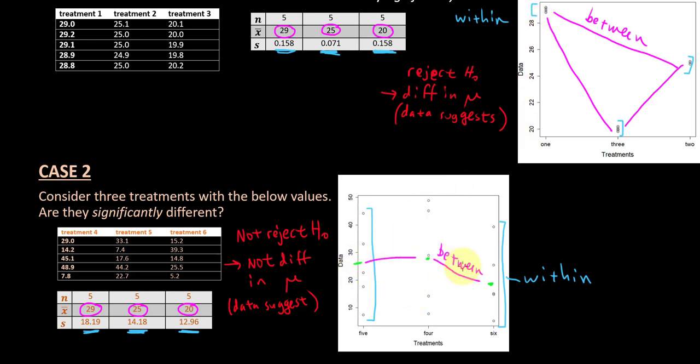So case number one here, this difference in the sample means seems really large because it is large with respect to the within variability. The change in pink here is large with respect to this blue bar. Over in case number two, the change in this pink amount is not that large when compared to how spread out this blue variability is. Even though in these two cases, they both have the same sets of sample means—29, 25, 20, and 29, 25, and 20.